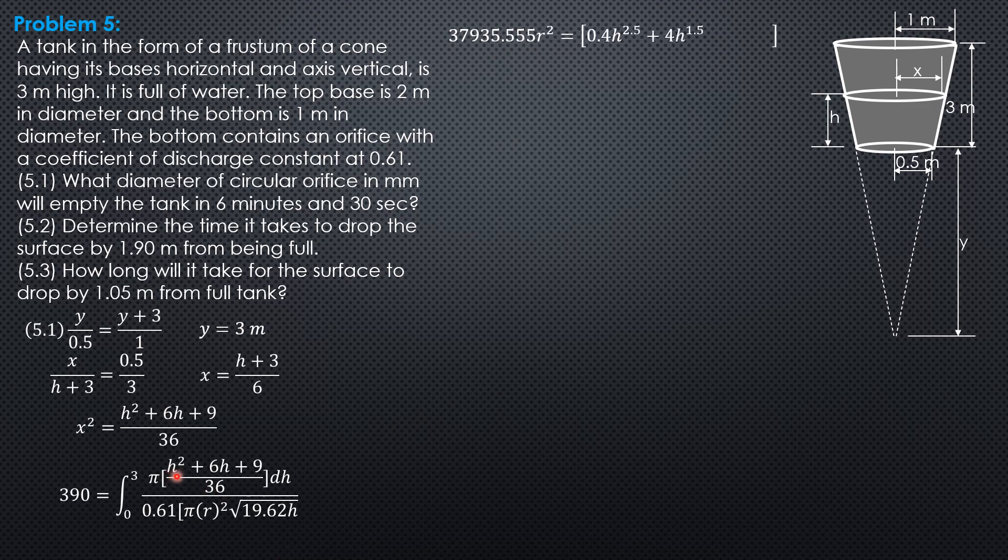Then we have integral of H squared over square root of H. That's H to the 3 halves. Integral of H to the 3 halves is H to the 5 halves or H to the 2.5 over 5 halves. And reciprocal of 5 halves is 2 fifths or 0.4. So we have 0.4 H to the 2.5.